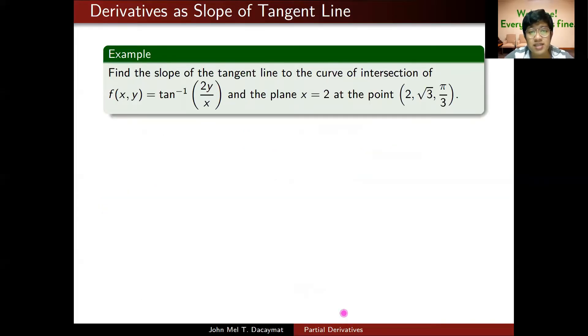Now if I take the same surface, but this time I want the slope of the tangent line when I intersect with the plane x equals 2. I have fixed x equals 2, so this is partial with respect to y at the point (2, square root of 3, pi over 3), with a being 2 and b being square root of 3. To do that, I'll find f sub y first.